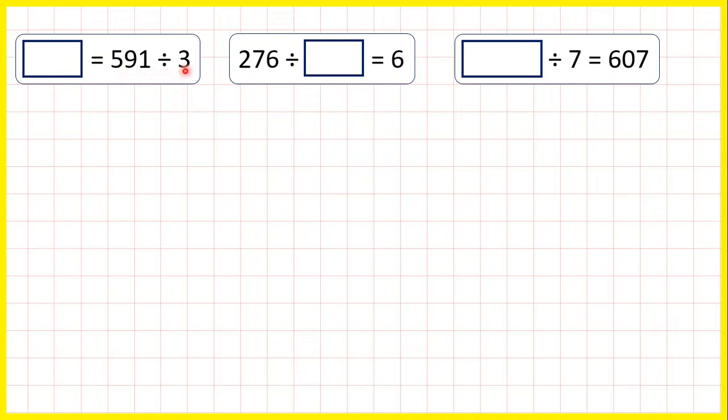That's because we have our problem, and it doesn't matter whether the equal sign is at the start, like it is here, or at the end, like it normally is, we do exactly the same thing, so we just need to divide 591 by 3.